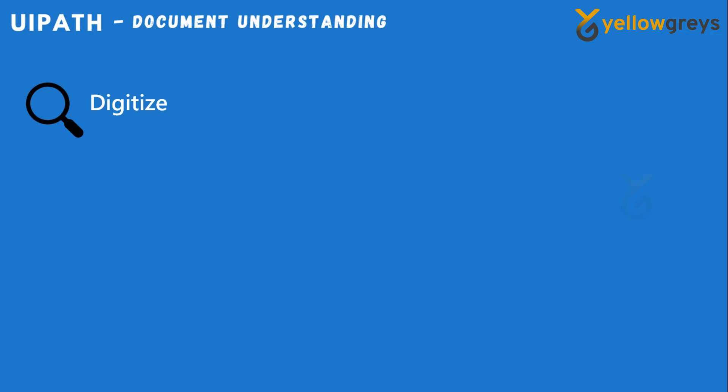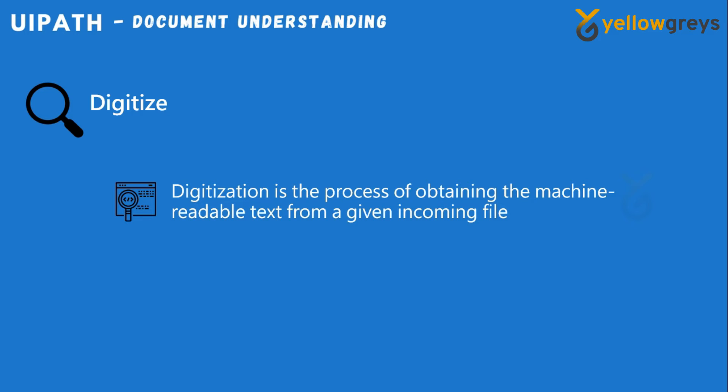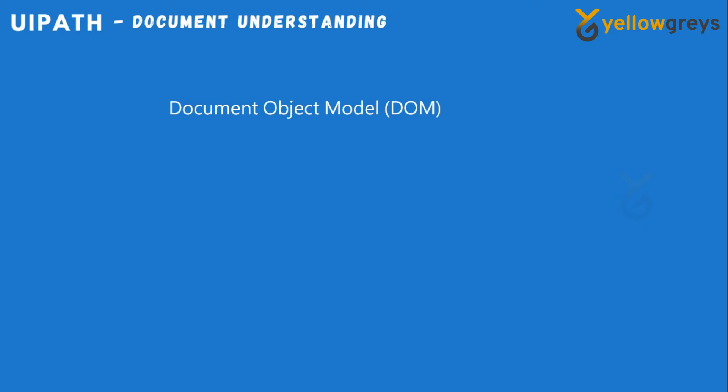Next, Digitize. Digitization is the process of obtaining machine-readable text from a given incoming file so that a robot can understand its content and act upon it. Digitizing a document extracts its Document Object Model (DOM) and text, storing them in their corresponding variable types. The DOM is a JSON object containing basic information such as name, content type, text length, and number of pages, as well as detailed information such as page rotation, detected languages, content, and coordinates for every word identified in the file.